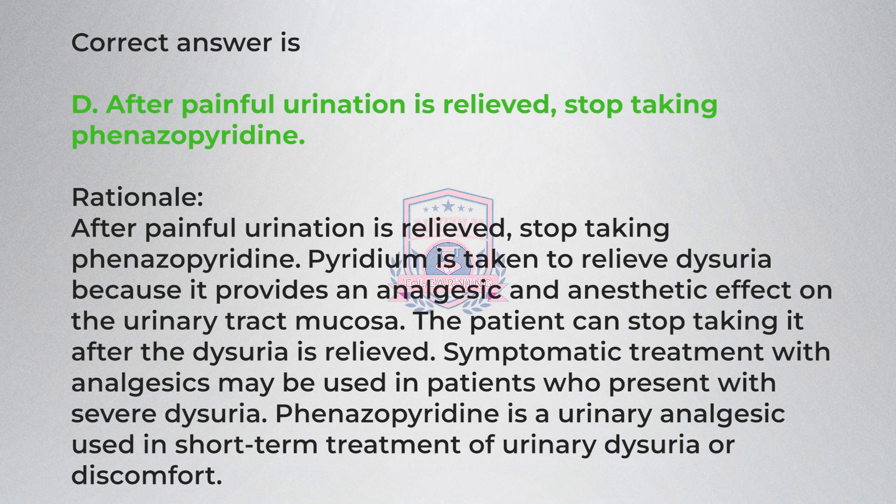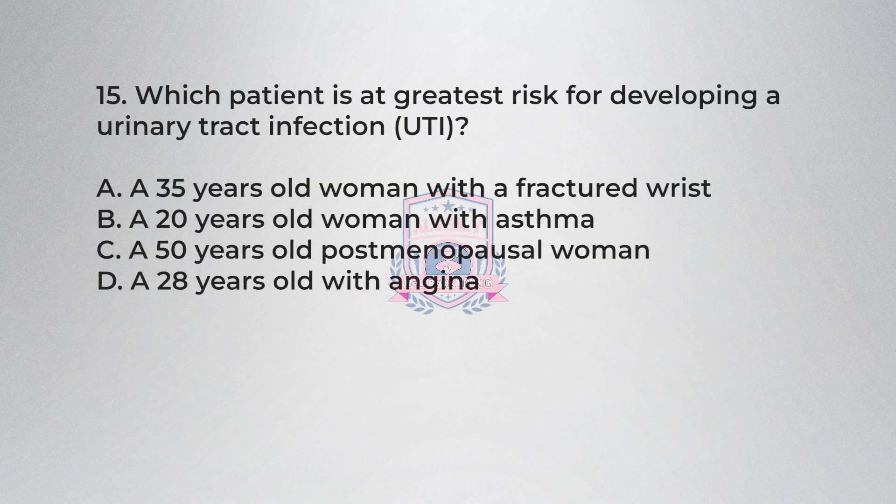Rationale: Phenazopyridine is taken to relieve dysuria because it provides an analgesic and anesthetic effect on the urinary tract mucosa. The patient can stop taking it after dysuria is relieved. Phenazopyridine is a urinary analgesic used in short-term treatment of urinary dysuria or discomfort.